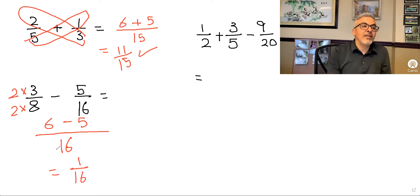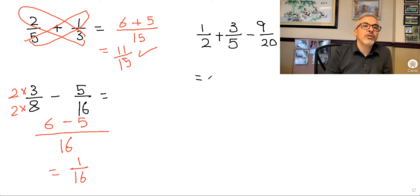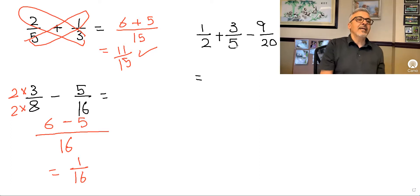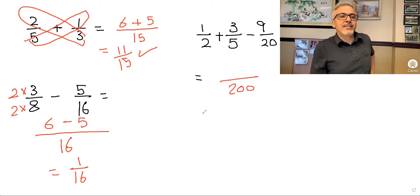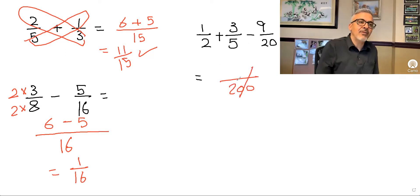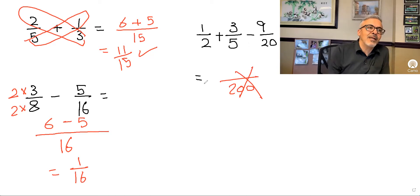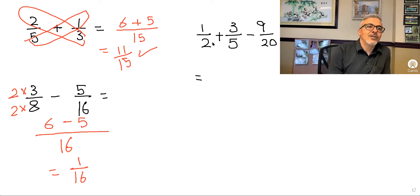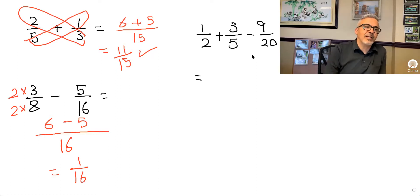That's one reason why you shouldn't use that shortcut method. Now, what about three fractions? How are you going to apply the cross rule there? You might find 2 times 5 is 10, then 10 times 20 is 200 — but that is definitely not our lowest common denominator. As I always show my students: go to the biggest number, which is 20. Does 2 go into 20? Yes. Does 5 go into 20? Yes. So 20 is our lowest common denominator.